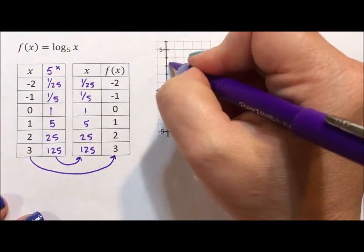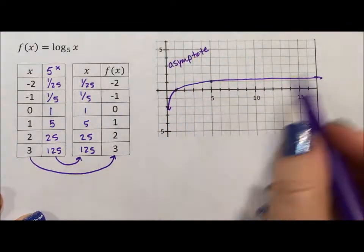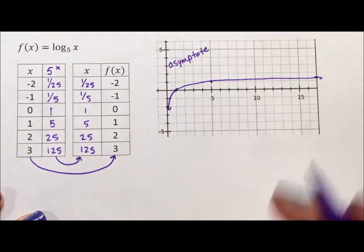This is an asymptote. An asymptote is a barrier that does not get crossed. So that means this will never equal 0 or be negative.